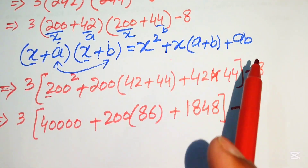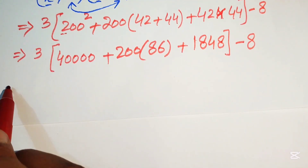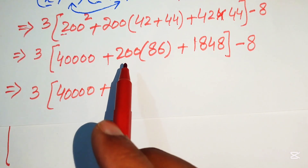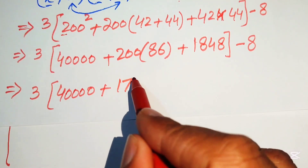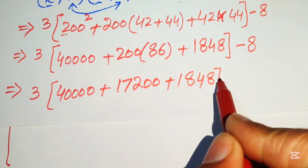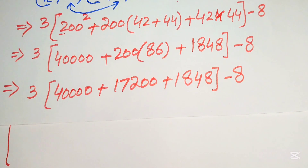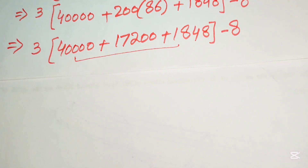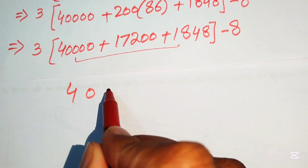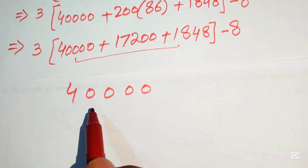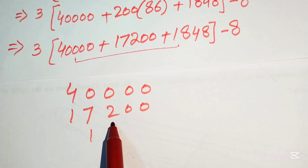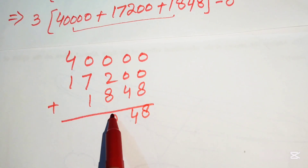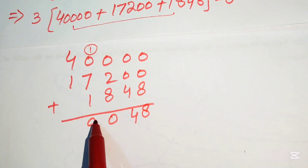The minus 8 is placed here. Then 200 times 86 equals 17,200. So we have 3 times the quantity 40,000 plus 17,200 plus 1,848, minus 8. Adding these three numbers together using column addition gives 59,048.